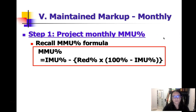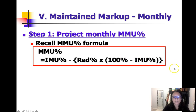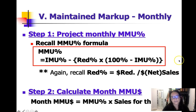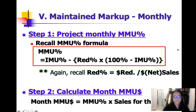The maintained markup formula is IMU minus reductions times (100% minus IMU). The reduction percentage is reduction dollars over net sales dollars, because reductions are a percentage of net sales. For step two, maintained markup percentage times sales for the month gives us the maintained markup dollars. And maintained markup dollars divided by sales equals maintained markup percent.